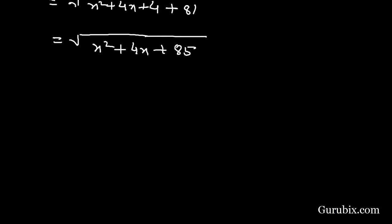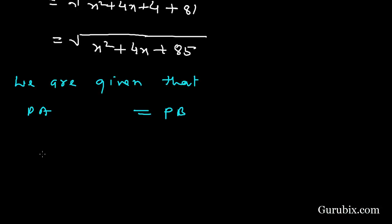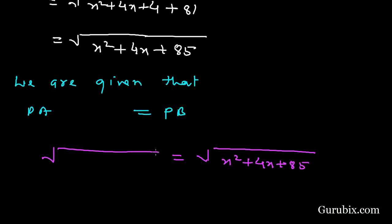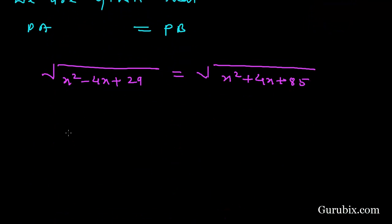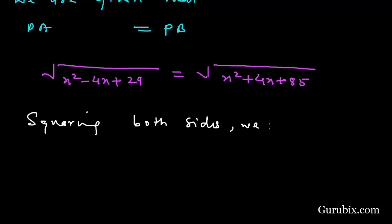We are given that PA equals PB. So √(x² - 4x + 29) = √(x² + 4x + 85). Squaring both sides, we get x² - 4x + 29 = x² + 4x + 85.